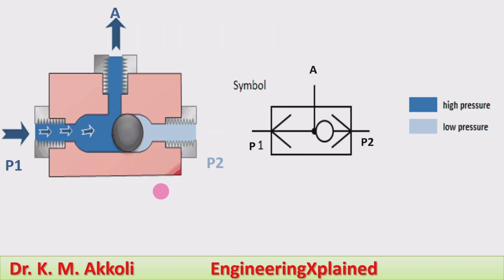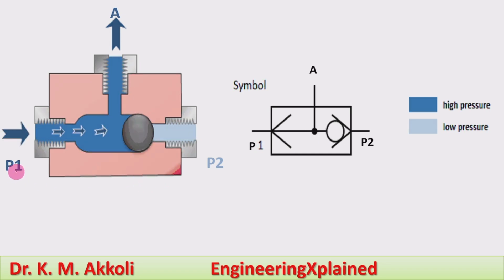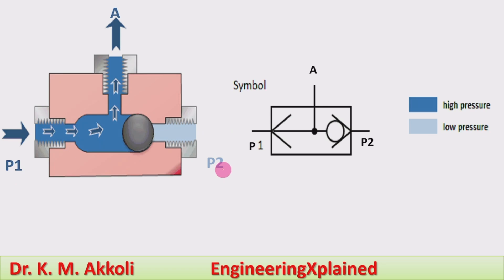First, let's understand what is meant by shuttle valve. A shuttle valve has two inputs and one output. P1 is the input from source 1 and P2 is the input from source 2, and depending upon the pressure,